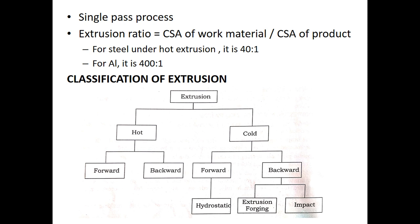When we are discussing about extrusion, we have to understand one very important parameter called the extrusion ratio. It is nothing but the ratio of the cross-sectional area of the work material divided by the cross-sectional area of the product. For steel under hot extrusion, this ratio is 40:1, and for aluminium it is 400:1.